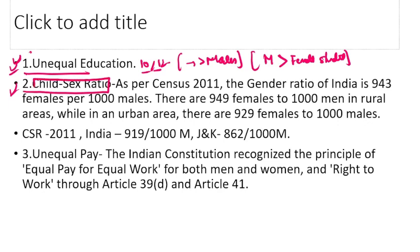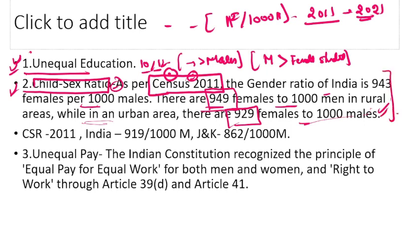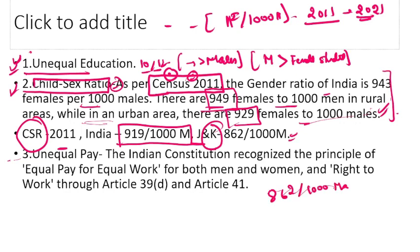Child sex ratio — यह define होता है as number of females per thousand males। 2011 census के अनुसार gender ratio था 943 females per thousand males। Rural में 949 females per thousand males और urban areas में 929 females per thousand males। India का child sex ratio 2011 में 909 females per thousand males था, and J&K का था 862 per thousand males। यह data government website से लिया गया है।